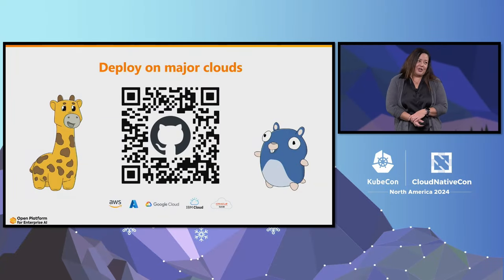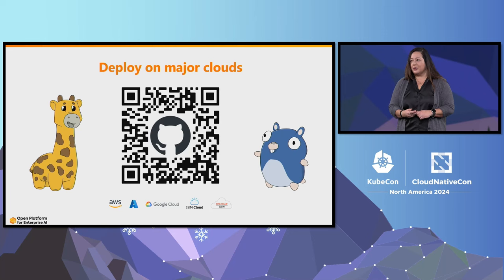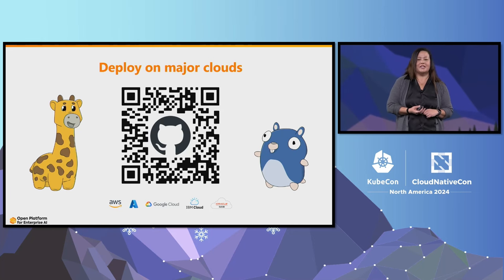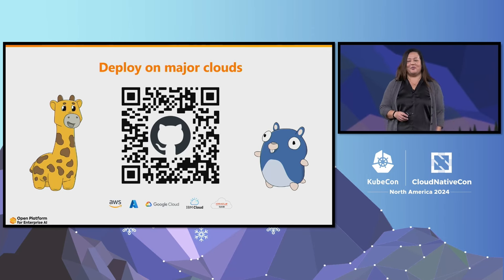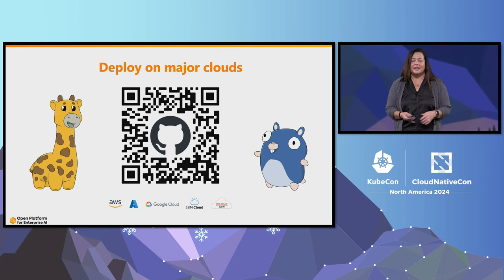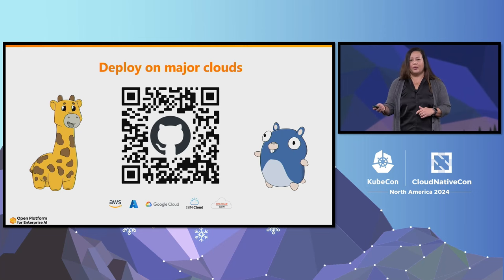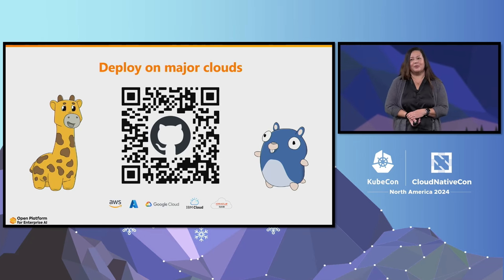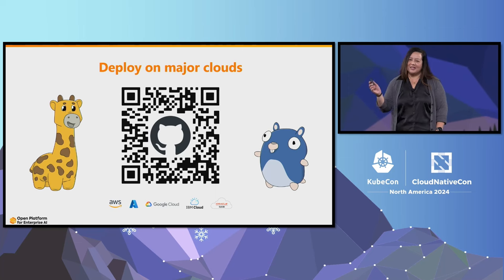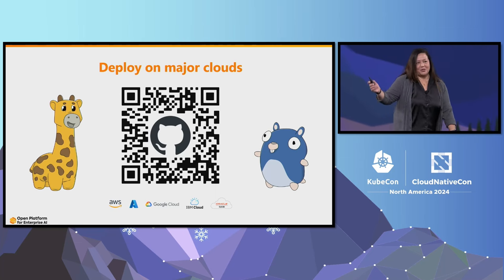As an open source project, OPEA relies on contributions from individuals like you and partners across the industry to create and test each component. We've been working with multiple cloud providers to build the best experience possible. Please check out the OPEA Getting Started Guide on GitHub — it's filled with open source recipes you can use to build cloud-native generative AI applications for chat, code generation, Q&A, and so much more. If you've got questions and would like to learn more, please come find us at the Intel booth in the Expo Hall, we're in G5. Thanks for your time today — say hi to Fippy and Goldie, and enjoy KubeCon!